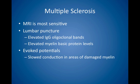Multiple sclerosis should be suspected in any young adult with recurrent, varied neurologic symptoms or signs when no other causes are evident. The best diagnostic tests are an MRI, which is the most sensitive; lumbar puncture, which will reveal elevated IgG oligoclonal bands and myelin basic protein levels as well as mild elevation in lymphocytes and proteins; and evoked potentials, which will show slowed conduction through areas of damaged myelin.